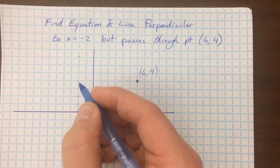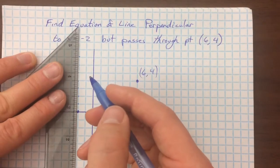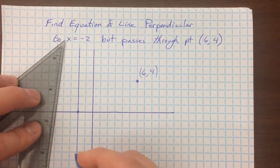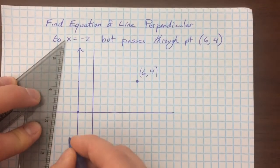this equation represents all of the points that have an x value of negative 2. Negative 2, 1, negative 2, 2, negative 2, 3, and so on, and so this is just a vertical line. So, this is my line x equals negative 2.